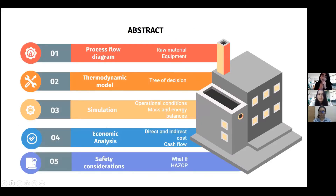The model is represented by a process flow diagram with the raw materials, equipment, and streams. The properties of the raw material are important to determine the thermodynamic models based on the decision tree. Simulation by PRO/II with the correct operational conditions to obtain mass and energy balance. Economic analysis by CAPCOST to obtain direct, indirect manufacturing and utility costs, and also a cash flow to analyze the rentability of the project. Finally, safety considerations and what-if analysis.